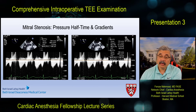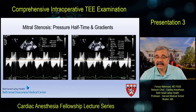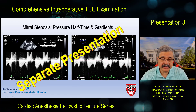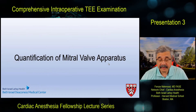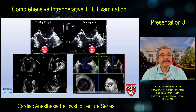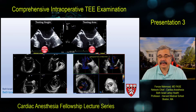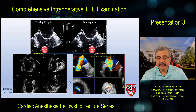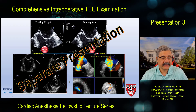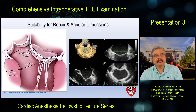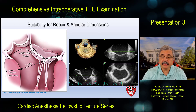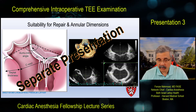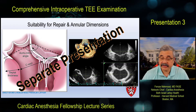For mitral stenosis, pressure half-time or mean gradients are used. Quantification of the mitral valve apparatus includes tenting height, tenting volume, tenting area, valve annular diameters at 0 and 90 degrees, and 3D assessment of vena contracta using multiplanar reformatting. Important quantifications for suitability for repair include the aortomitral angle, septal thickness, C-sept distance, and ALPL ratios. The focused tricuspid valve examination uses mid-esophageal 0, 90, and 135 degrees and transgastric short and long axis: mid-esophageal four-chamber, mid-esophageal short-axis, RV inflow and outflow, bicaval, modified bicaval, and transgastric basal short axis.